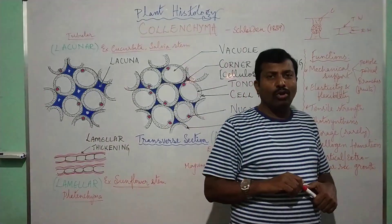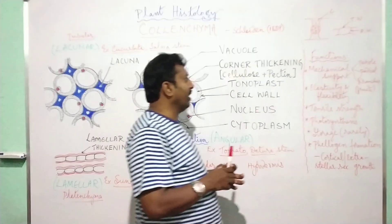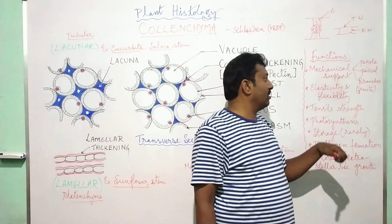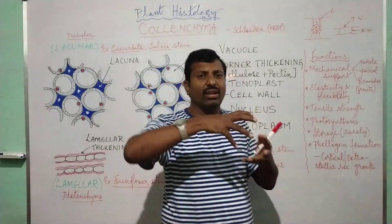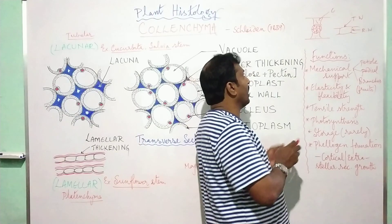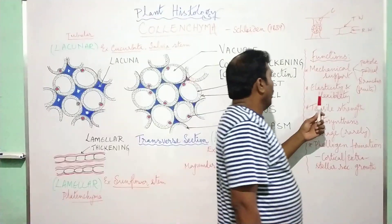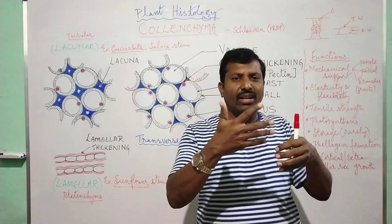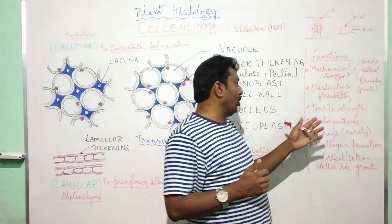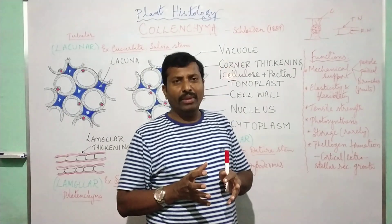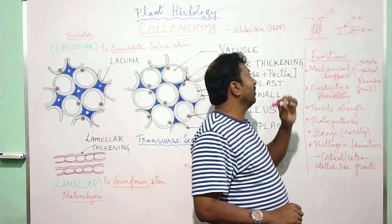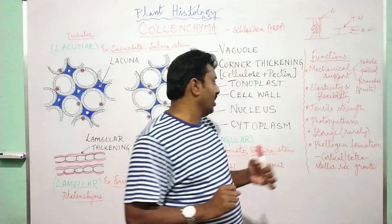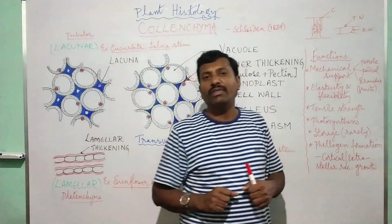Coming to the functions of Collenchyma, it has a vital role in plants. Mainly, it is involved in mechanical support because it is found in various parts like pedicel, branches, and also as bundle sheath extension around the vascular tissues in plants like dicot leaves. It gives elasticity, flexibility, density, and strength to the plant body. When leaves flutter with wind blowing, the leaves won't break because of the presence of elastic Collenchyma tissue. Sometimes in the hypodermis of a very young dicot stem, there will be presence of chloroplasts, and then Collenchyma also performs the function of photosynthesis.